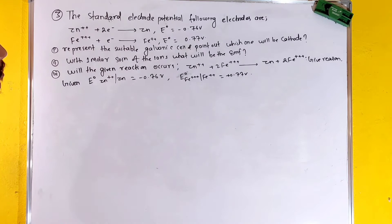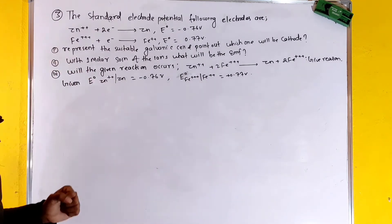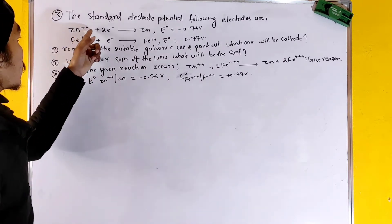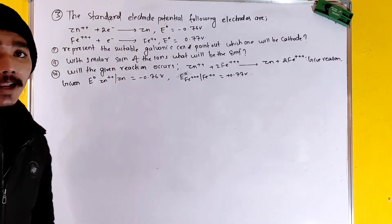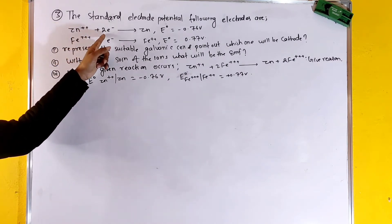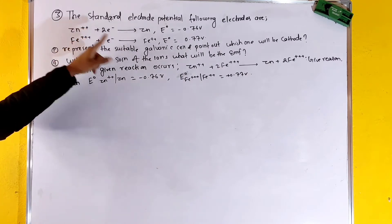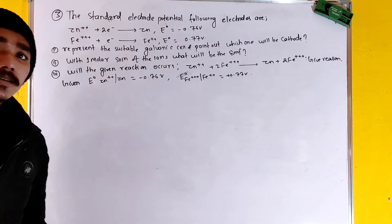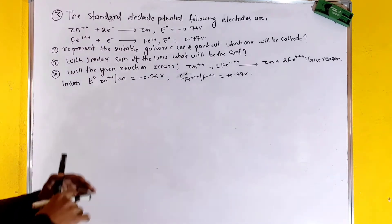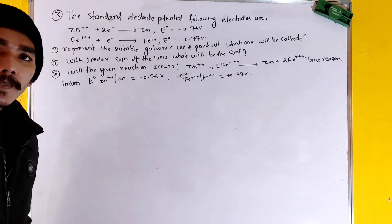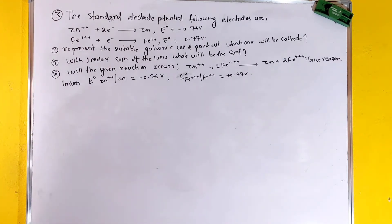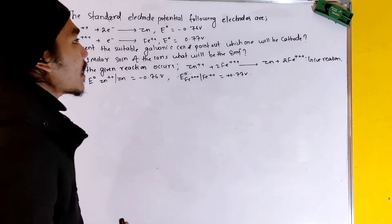The standard electrode potentials of the following electrodes are given. We have zinc and iron. The reaction is: Zn → Zn²⁺ + 2e⁻, E⁰ = 0.77 V. We have Zn²⁺ plus charge, reduction. We need to discuss how to find the suitable galvanic cell, point out which one is the cathode, find the EMF with one molar solution of the ions, and determine whether the reaction will proceed or not.